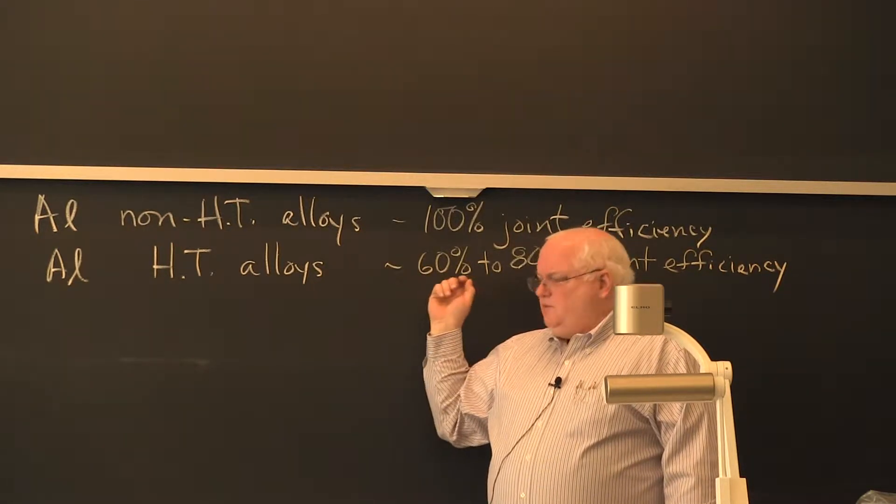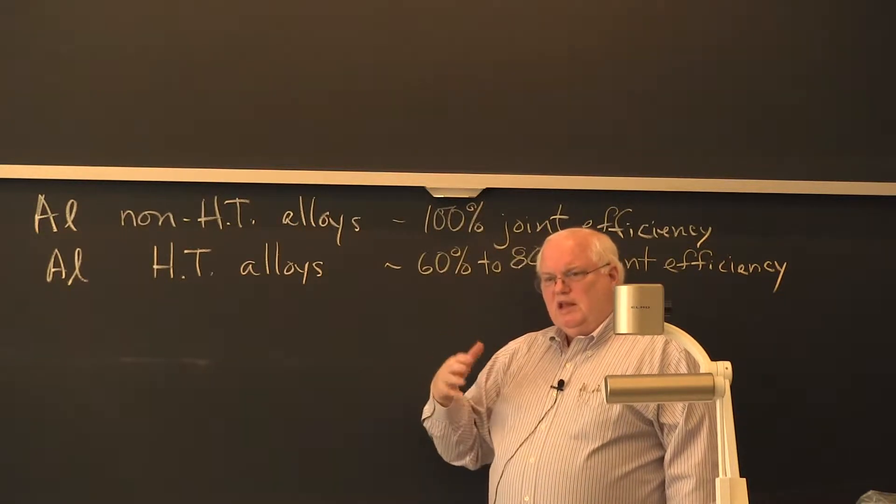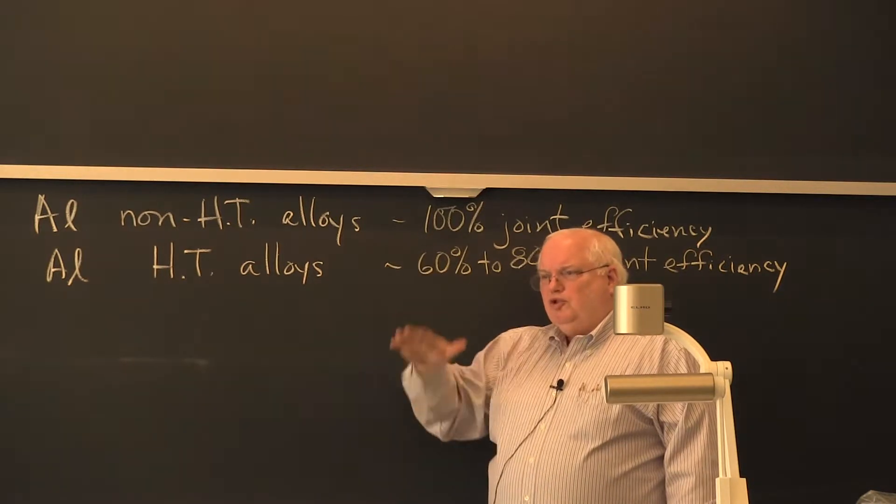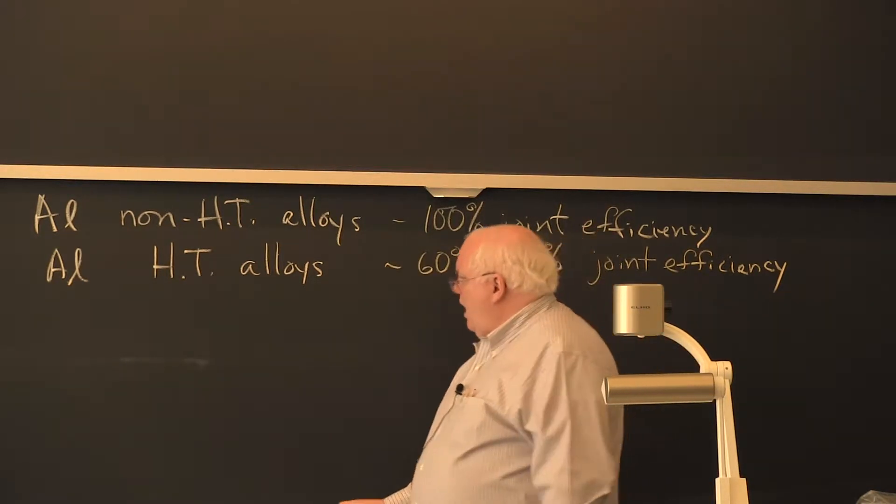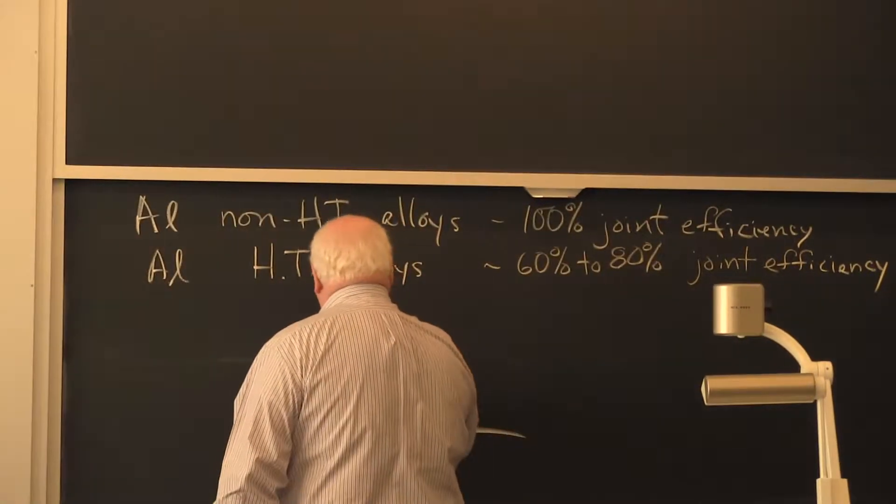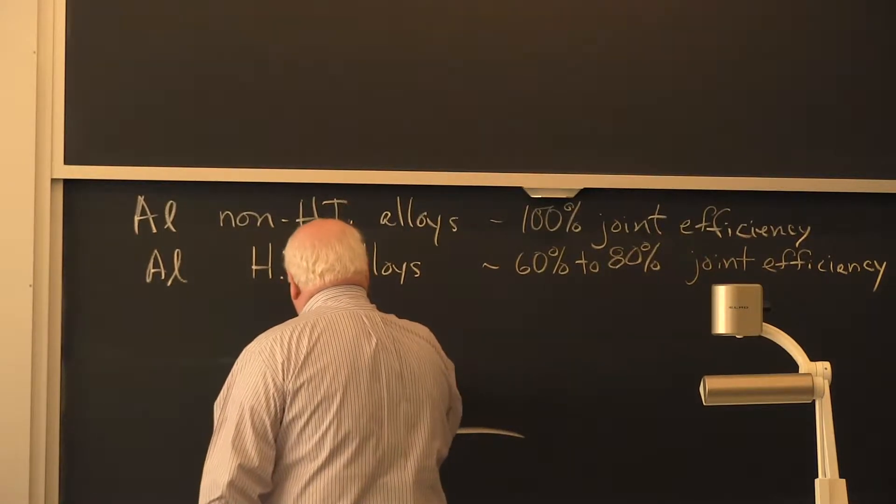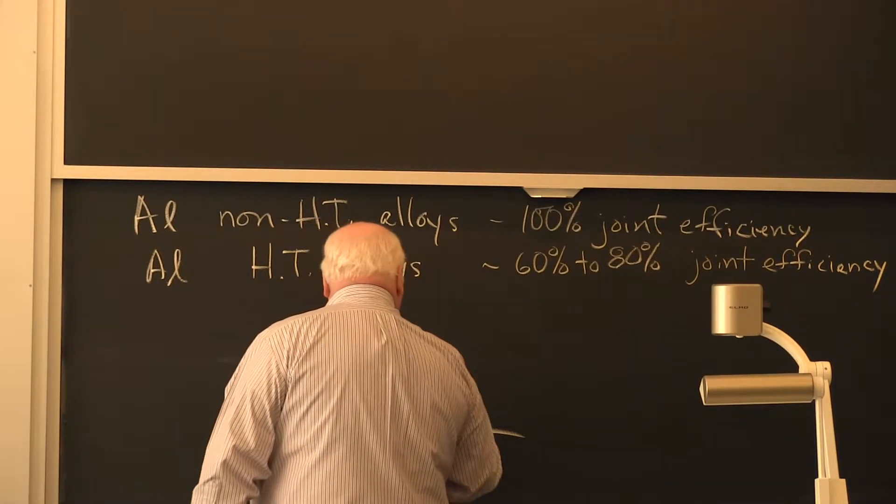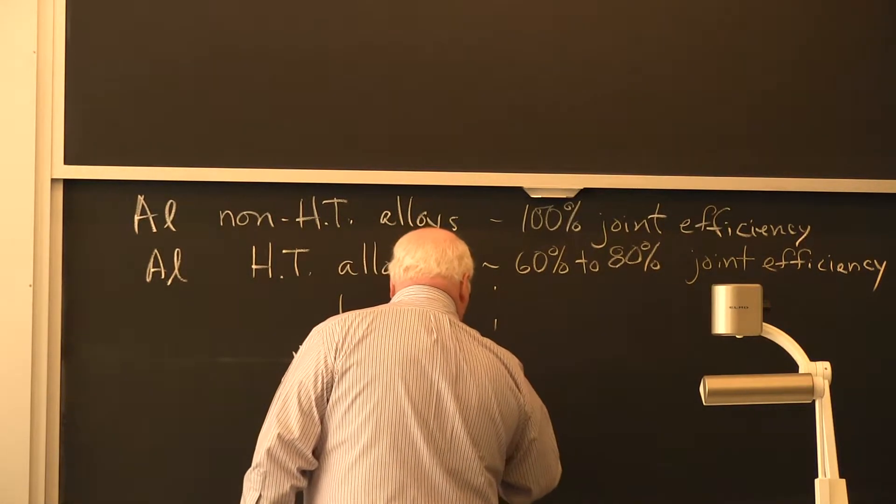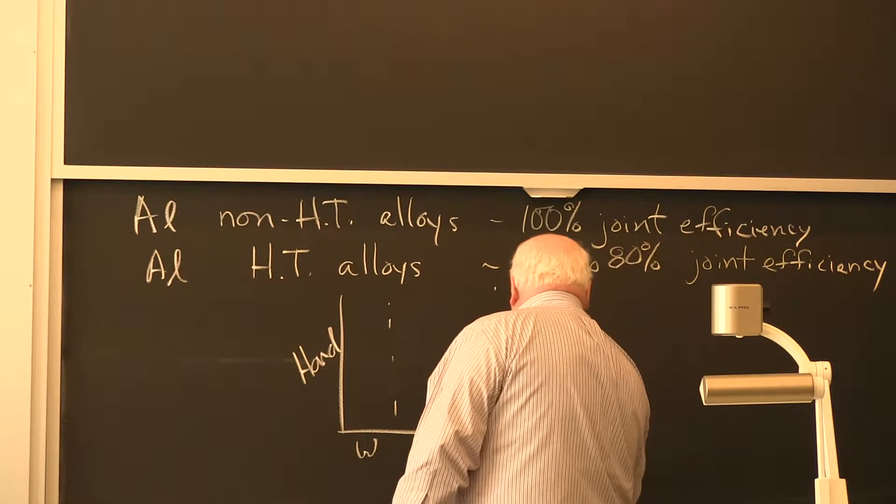But the precipitation, the heat-treatable ones are precipitation hardened, which means when you heat them, the heat of welding overages the material in the heat-affected zone. You lose your strength. If you actually plot the hardness across the weld, this will be the weld, this is the hardness, weld, heat-affected zone, and base metal.